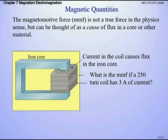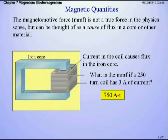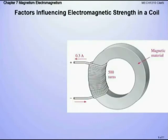Let's do another example. What's the MMF if a 250-turn coil has 3 amps through it? It's simply 250 × 3 = 750 amp-turns. Remember that A-T stands for amp-turns. Just another example: 0.3 amps through a 500-turn coil — multiply 500 × 0.3. When I give you milliamps or microamps, make sure you convert to amps first; 0.3 amps, not 300 milliamps, unless you write it as 300 × 10⁻³.